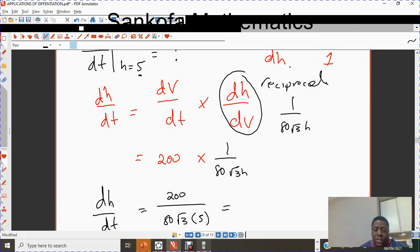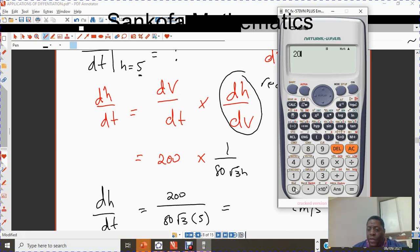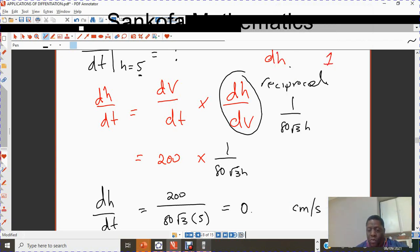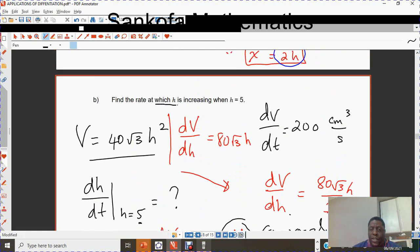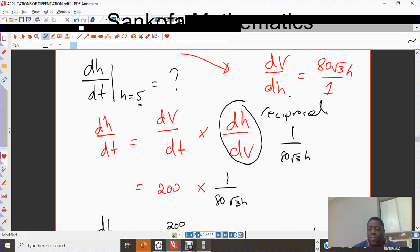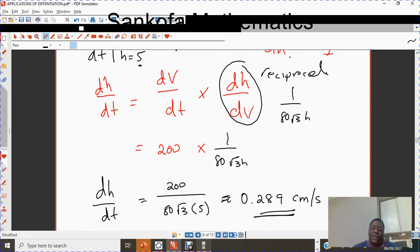That means we are finding just the height in terms of time. So our answer here should be centimeters per second. Let us grab our calculators and work it out: 200 divided by 80 times 5 times √3. We get about 0.289 centimeters per second. That's the rate at which our height will vary with respect to time. It's increasing at 0.289 centimeters per second when the height is 5.